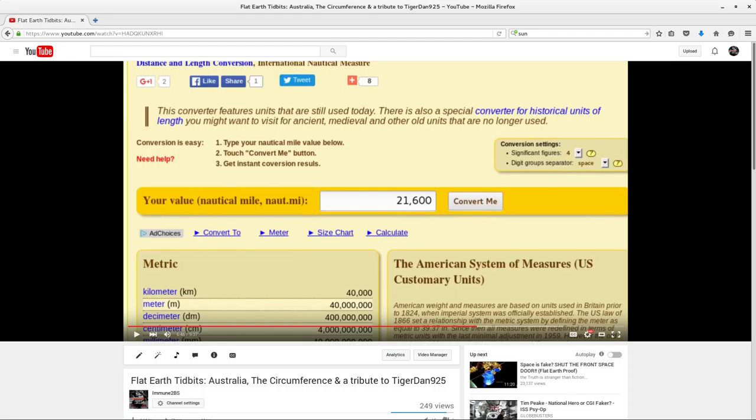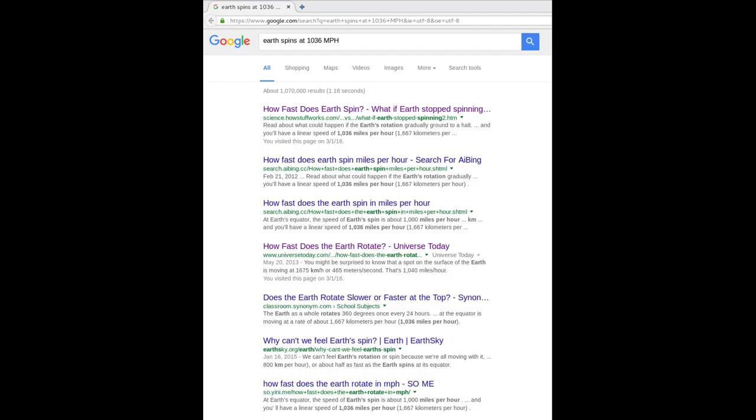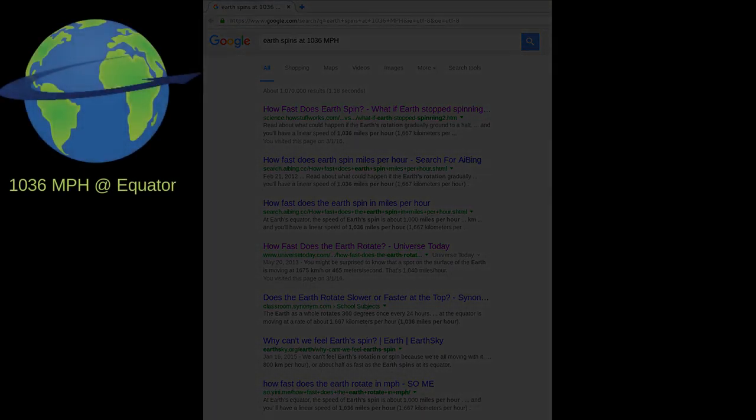So we've all heard it over and over again that the earth is spinning at the equator at a thousand miles per hour, or more precisely according to NASA, 1036 miles per hour. When we look at the Gleason map...